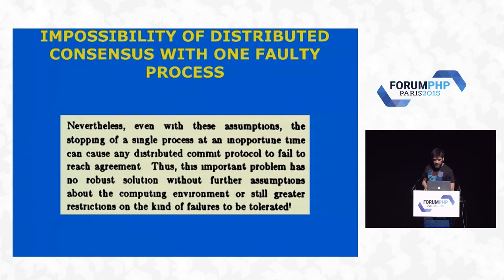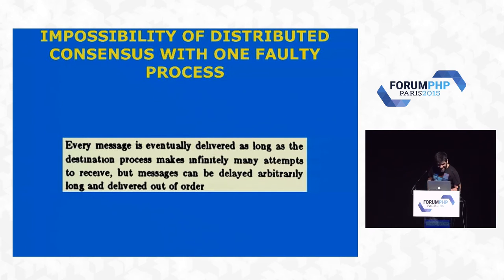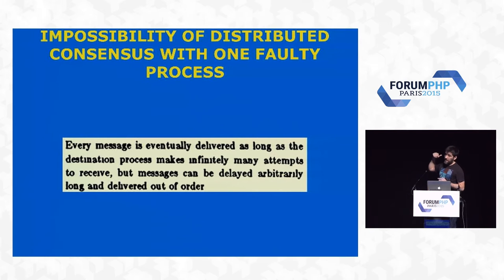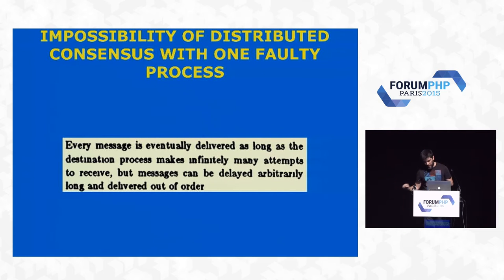The liveness property here is that every message is eventually delivered as long as the destination process makes infinitely many attempts to receive. The point is: to understand what they are trying to prove, you need to understand what asynchronicity means and what all these message guarantees mean. It's not that it's impossible to solve consensus — otherwise Paxos, Raft, and Zab wouldn't exist. They are saying that even with all those assumptions, if one process crashes you cannot solve it unless you introduce other things to the system.